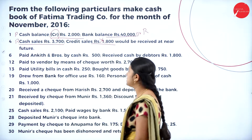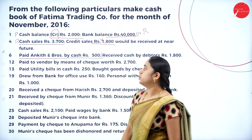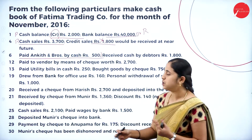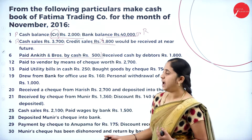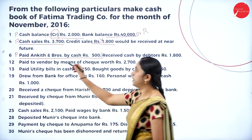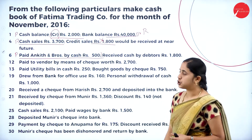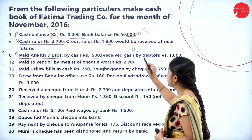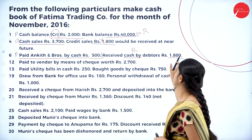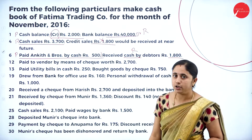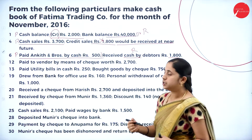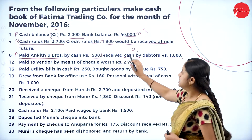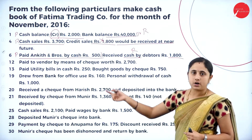Next, paid to Ankit and Brothers by cash 500. In a three-column cash book we have cash, bank, and discount columns. Here cash is going out, so the amount should be written in the cash column on the payment (credit) side — by Ankit and Brothers, 500 in cash column. Then, received cash from debtors 1800. This is the receipt for the earlier credit sale made on November 4th, received on November 6th — recorded on the receipt (debit) side in the cash column.